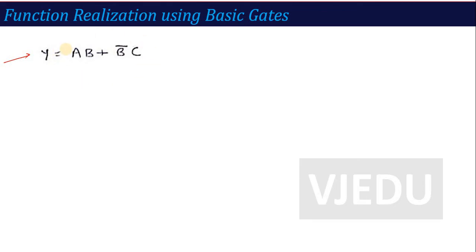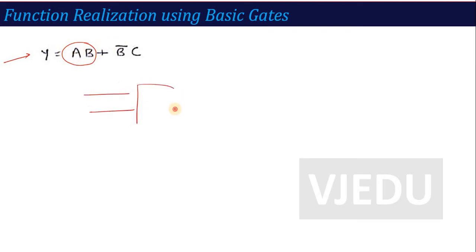We have to use basic gates. There is no restriction on which basic gates to use — AND, OR, and NOT are the basic gates. Looking at the expression, A·B requires an AND gate. We have studied the AND gate symbol, so here we use an AND gate with inputs A and B.